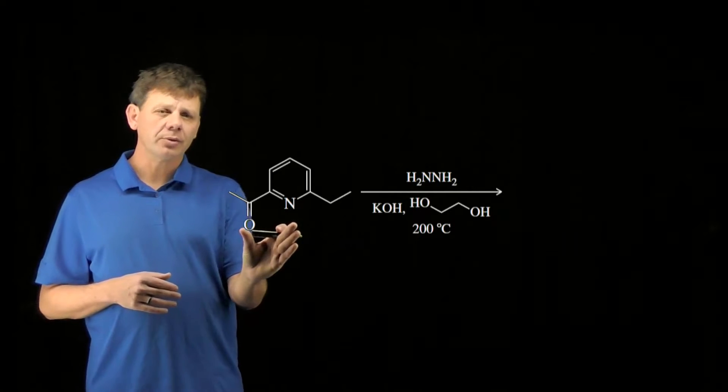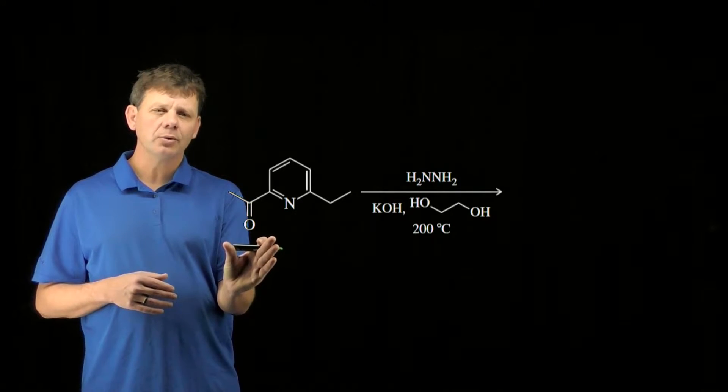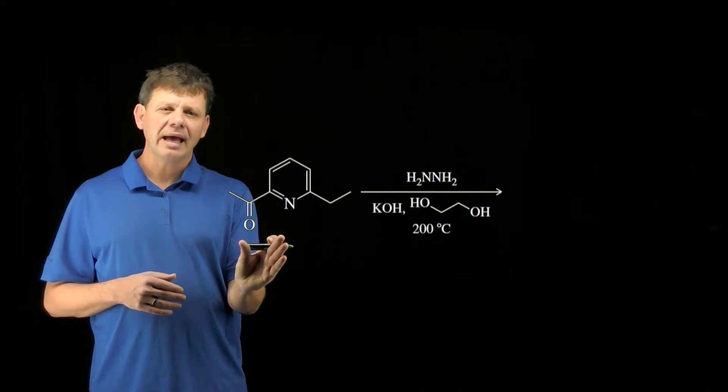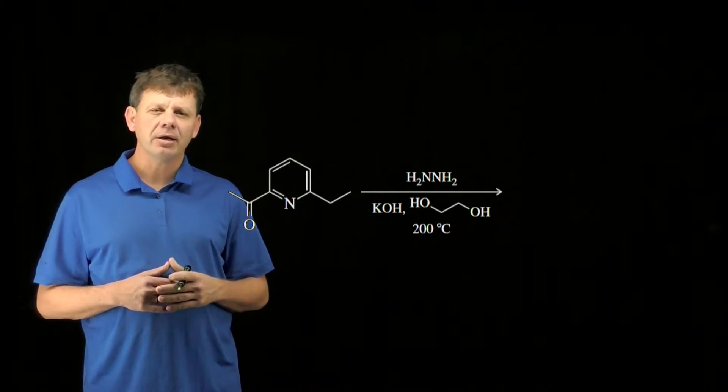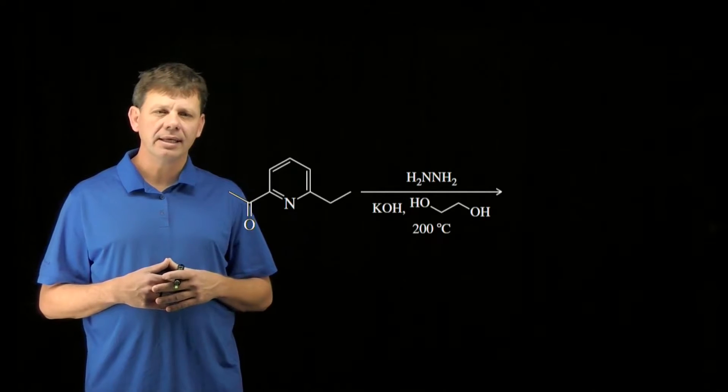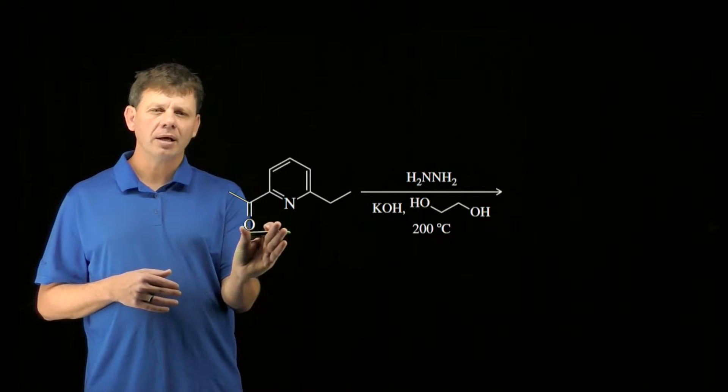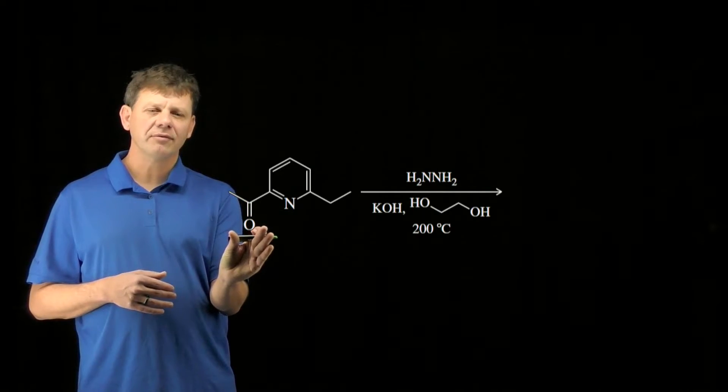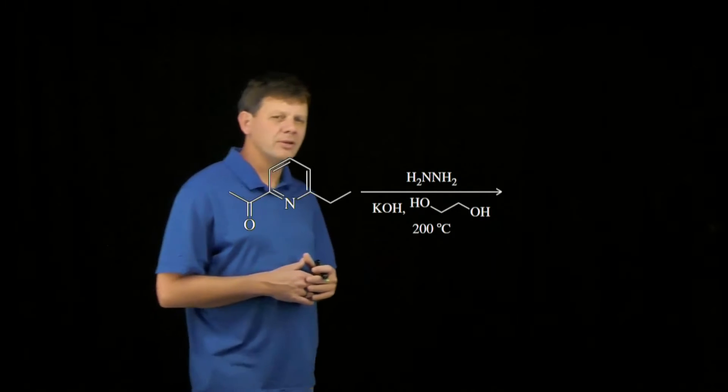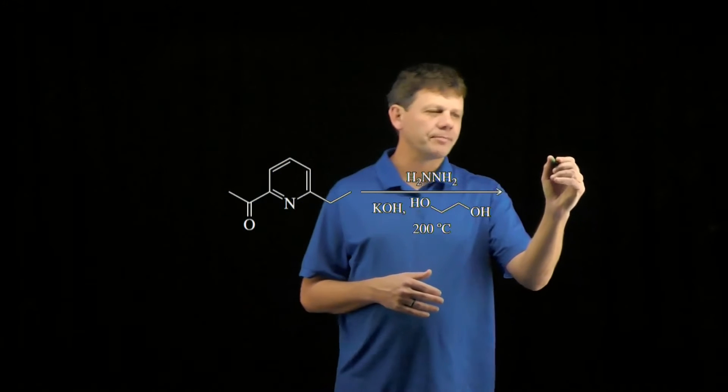Essentially what the Wolf-Kishner is going to do, it's going to reduce the molecule all the way down to the alkane at the carbon bearing either an aldehyde or a ketone. So both carbon-oxygen bonds in this functional group are going to be replaced with new bonds to hydrogen.